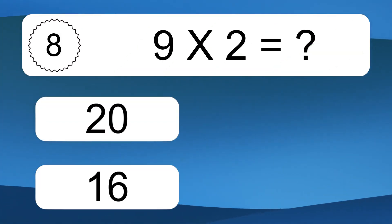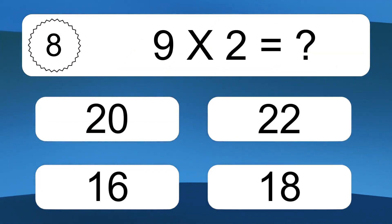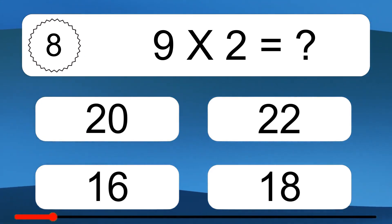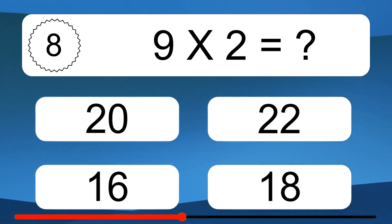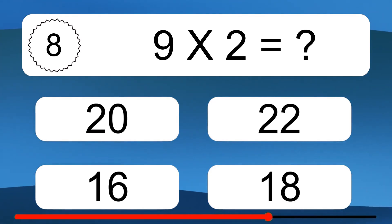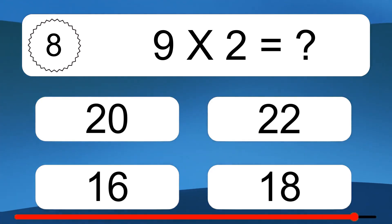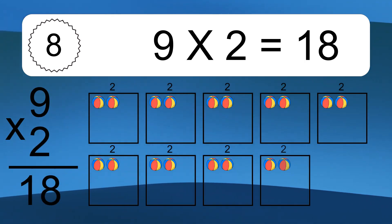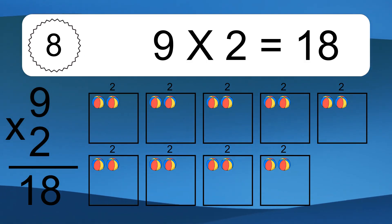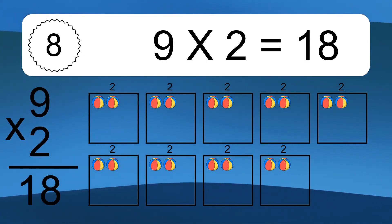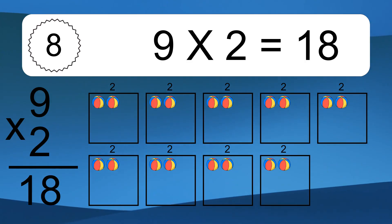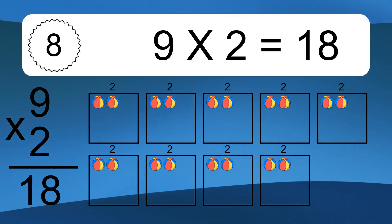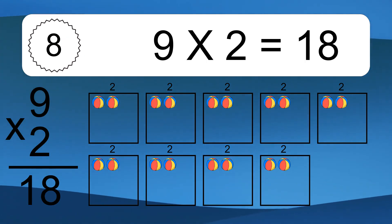9 times 2 equals what? 9 times 2 equals 18. We have 9 boxes, and each box has 2 colorful balls inside. If you count all the balls in all the boxes together, you will have 9 times 2 balls. This equals 18 balls.